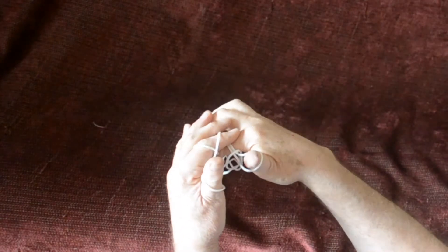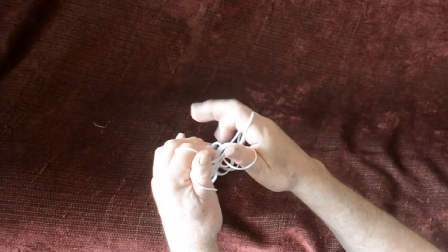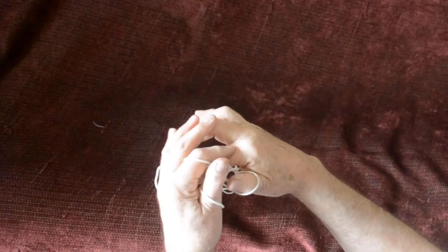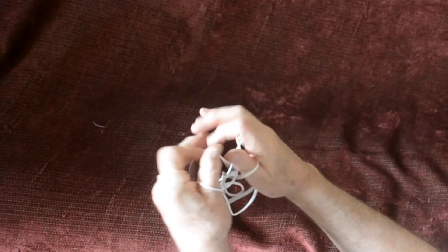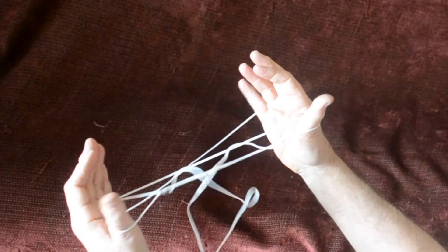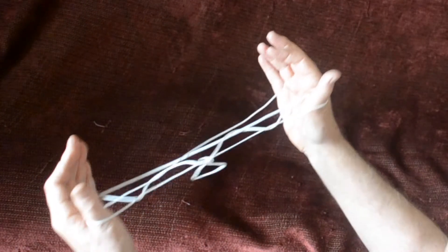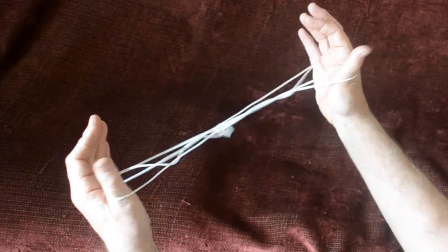Now you have to drop all the strings off the middle fingers or index fingers. Drop everything apart from the thumb loops and the little finger loops and draw tight. That's it.